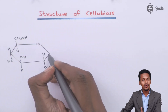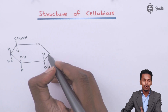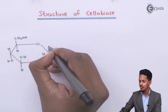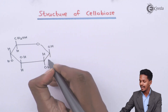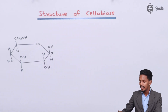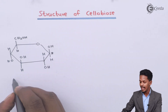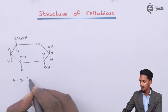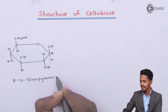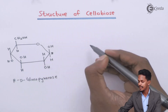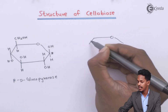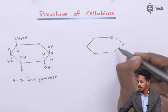If this molecule has to be beta-glucopyranose, then the OH should be attached on the upper side and H would be on the lower one — this is the anomeric carbon atom. So therefore this is what we have: beta D-glucopyranose. Similarly we could draw the other structure also, and this is how we are going to draw the structure of beta-glucopyranose.